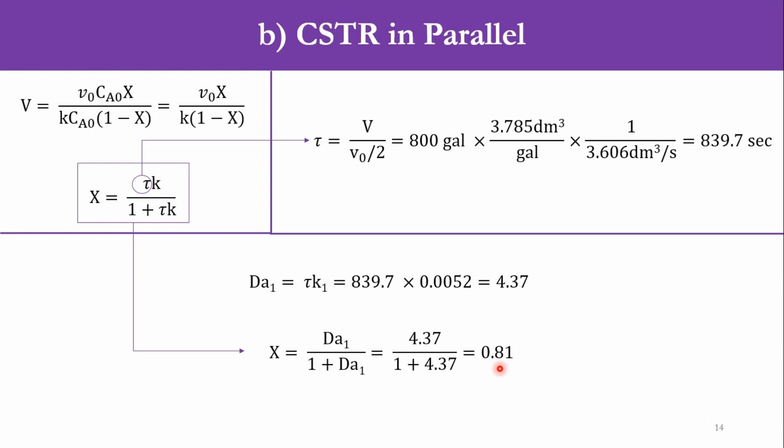So, you can see that for the CSTR in parallel and having a volume of 800 gallons, we get 81% conversion. And that will be same for both because the feed is split equally from the both reactors. So, accordingly we have calculated the conversion for the first reactor and for the second it will be the same, just 81%.